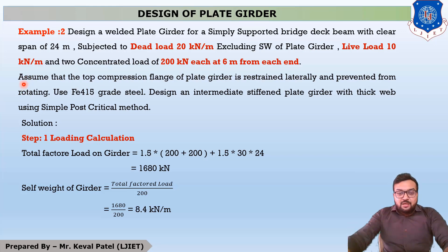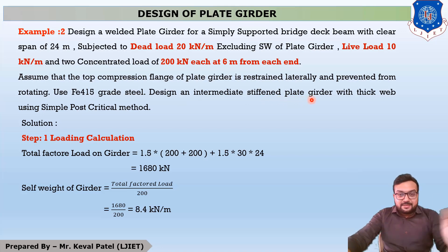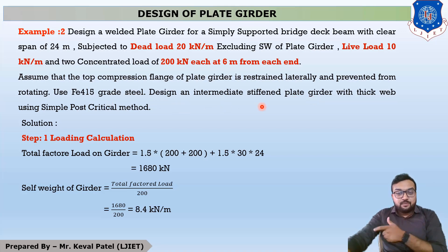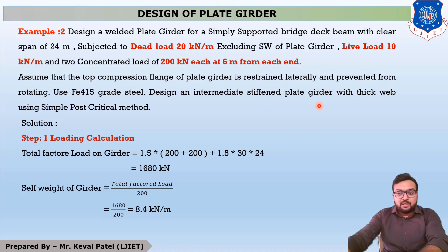The key difference between Example 1 and Example 2: Example 1 was an unstiffened plate girder with no stiffeners, while Example 2 requires designing an intermediate stiffened plate girder with a thick web using the simple post-critical method, which means you must check for web buckling using that method.